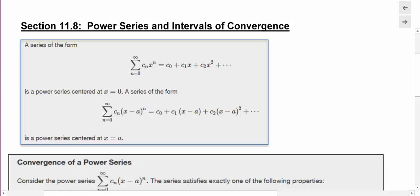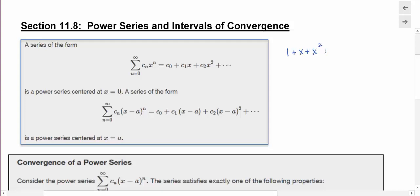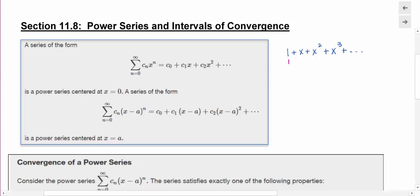Hi and welcome to a video for Calc 2 on power series and intervals of convergence. If I looked at this series of 1 plus x plus x squared plus x cubed and make that an infinite series, this is actually a power series where my constant or first term is 1 and I'm repeatedly multiplying by x. I can also look at this as a geometric series as we have in the past.